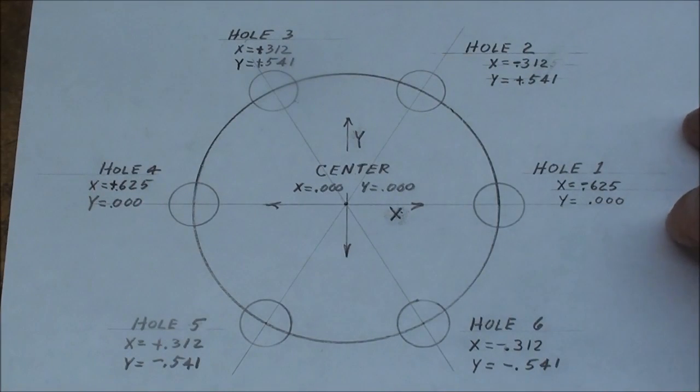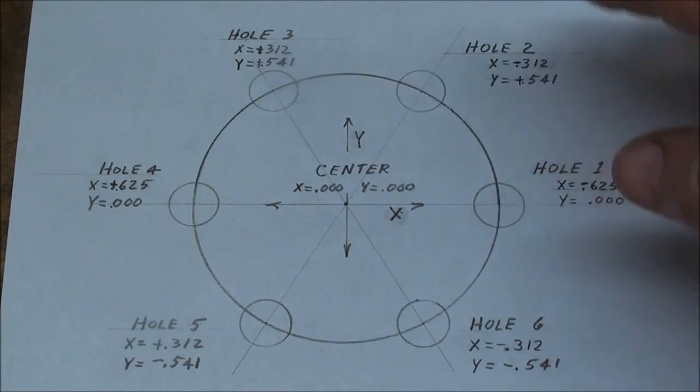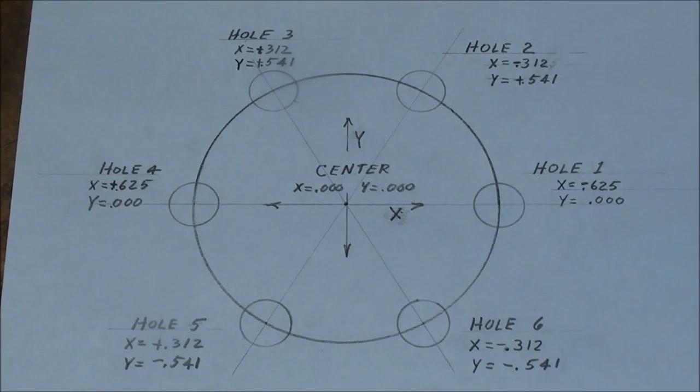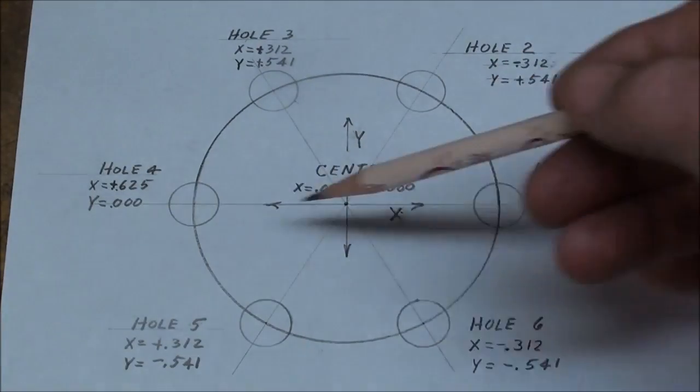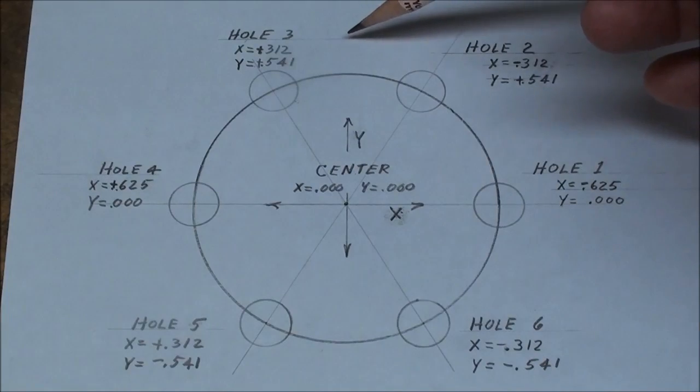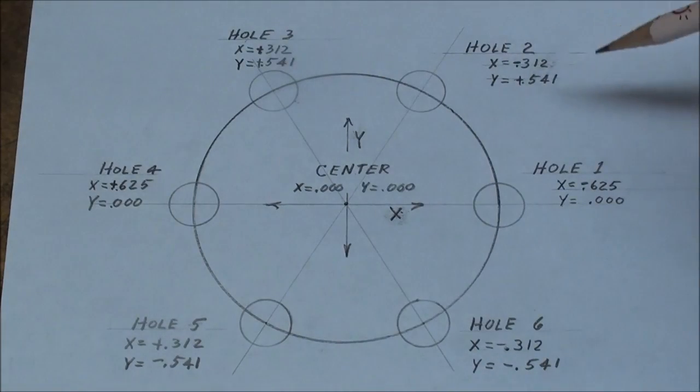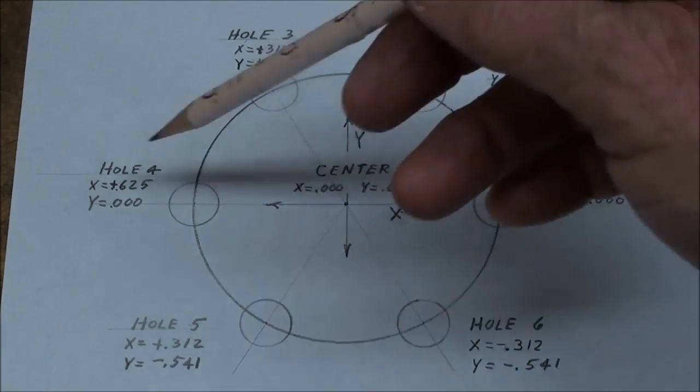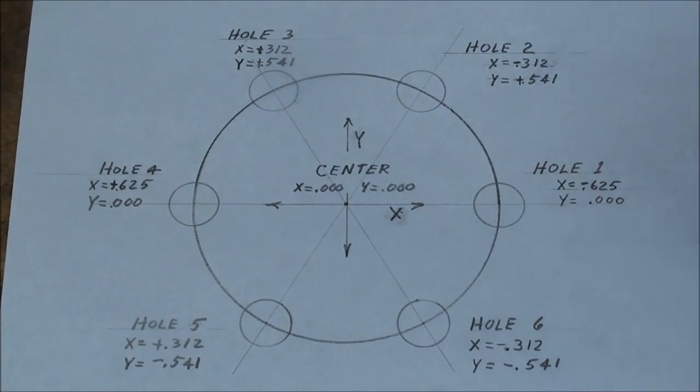I made a drawing of the bolt circle, and it's not to scale, but just to show you that the X axis is left to right, Y is away from you if you're standing at the machine or toward you, and I've gone counterclockwise here with hole one, two, three, four, five, six. You can do that the other way if you want.